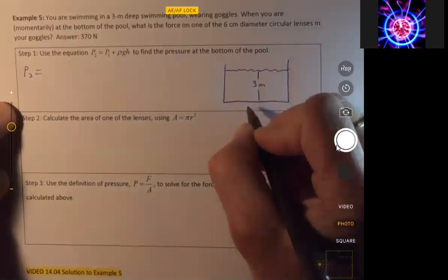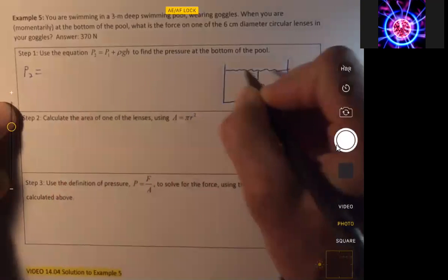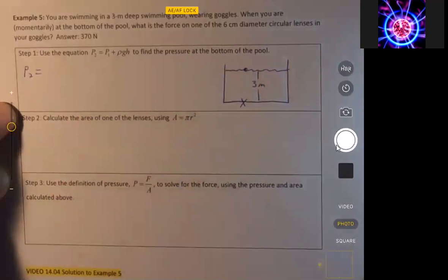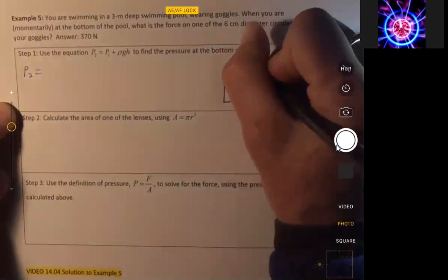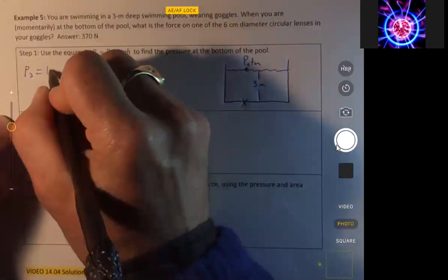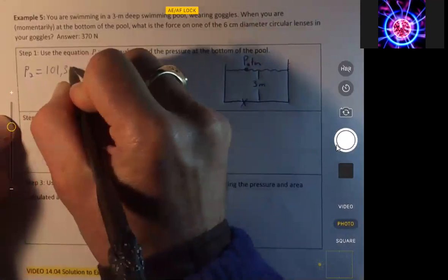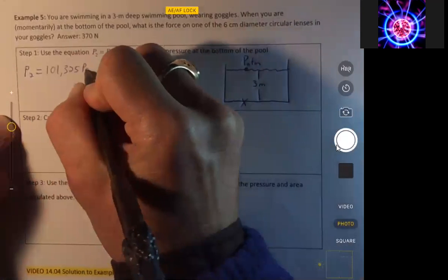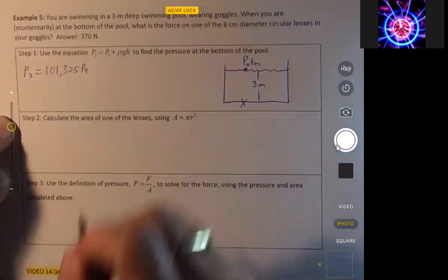We want to find the pressure down here, and we know the pressure up there. The pressure up there is not zero. The pressure there is due to the atmosphere, and so that's actually 101,325 pascals, or newtons per square meter,